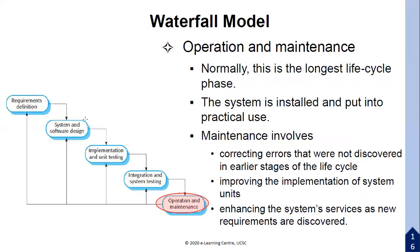Operation and maintenance is the longest phase. Once deployed, users may discover errors or have new requirements. The software must be maintained — errors are corrected and the system is updated to meet new requirements.